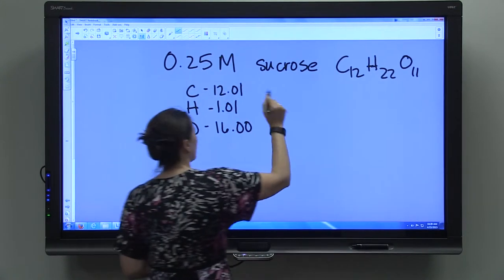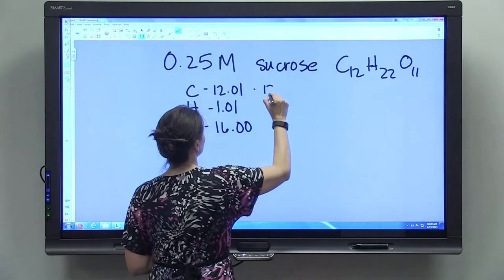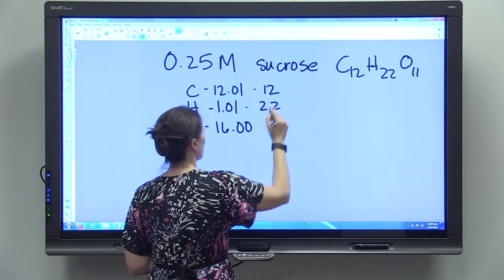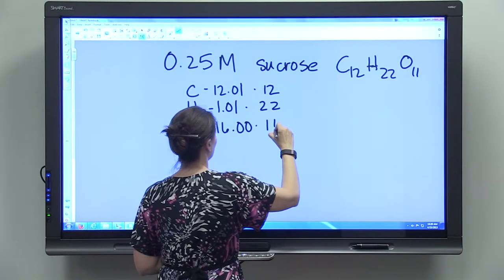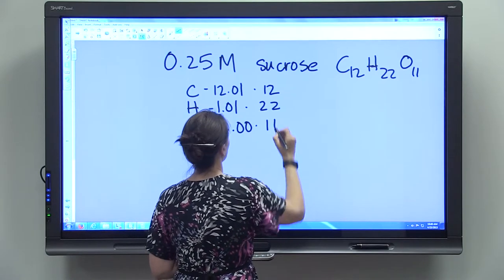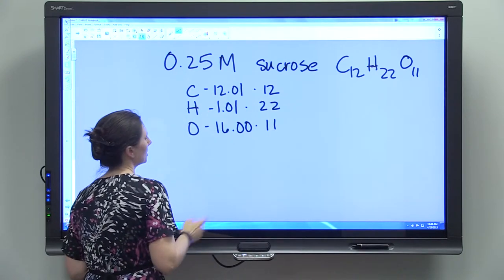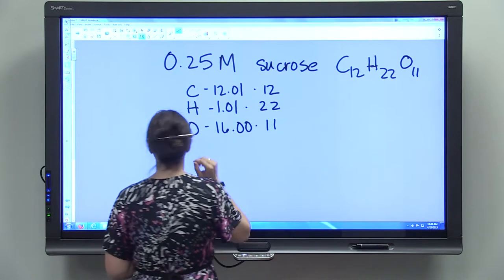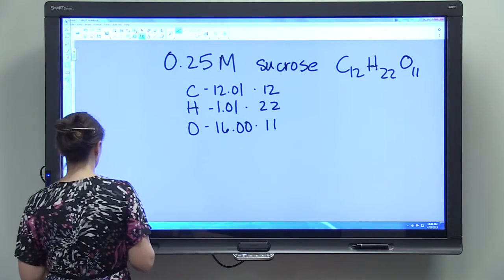So we have 12 molecules of carbon, 22 molecules of hydrogen, and 11, I'm sorry, not molecules, atoms. 12 atoms of carbon in this one molecule, 22 atoms of hydrogen, and 11 atoms of oxygen.